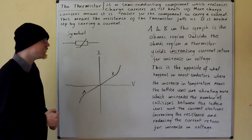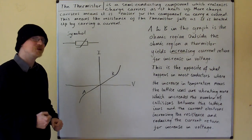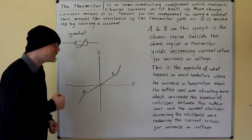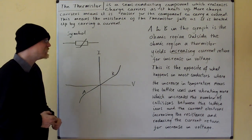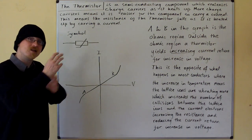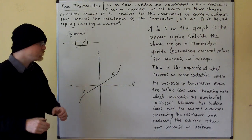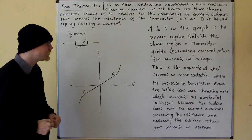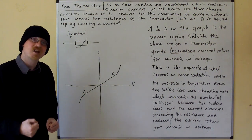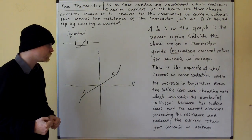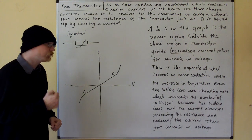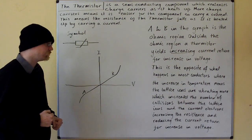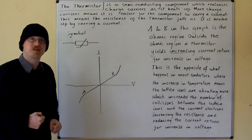This is the opposite of what happens in most conductors, where the increase in temperature means the lattice ions are vibrating more, which increases the number of collisions between the lattice ions and the current electrons, increasing the resistance and reducing the current return for an increase in voltage.